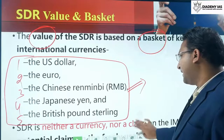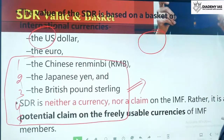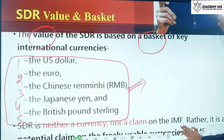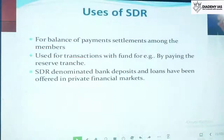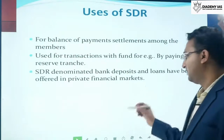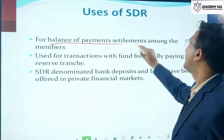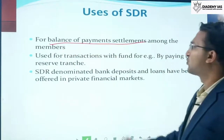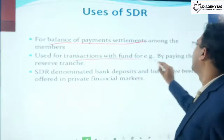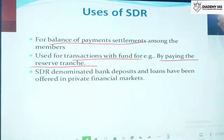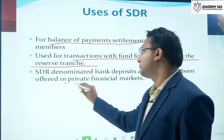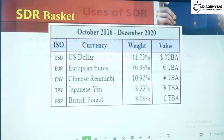SDR is neither a currency nor a claim on the IMF — rather it is a potential claim on the freely usable currencies of IMF members. The primary use is balance of payment settlement among members. It can also be used for transactions with the funds, for example for paying the reserve tranche, and SDR-denominated bank deposits and loans have been offered in private financial markets.